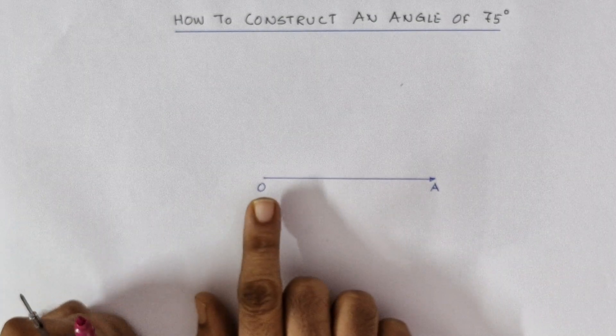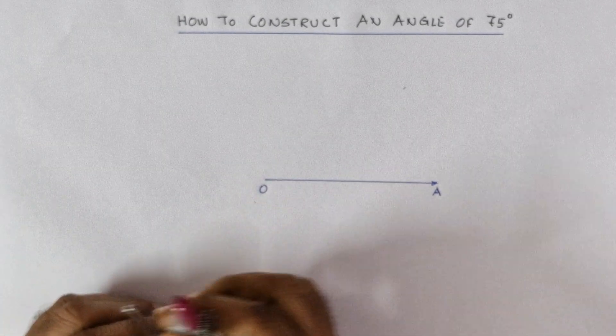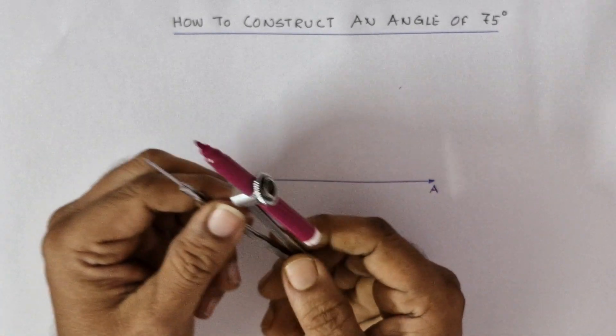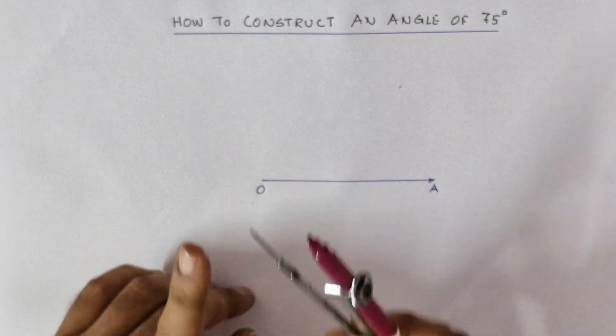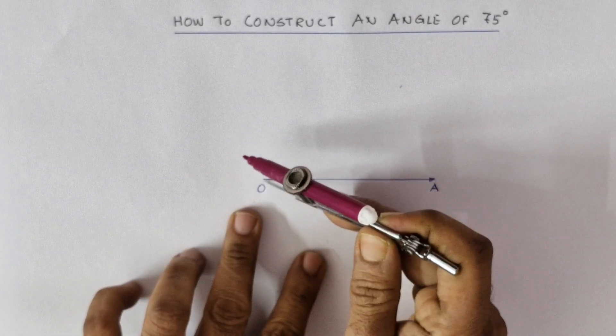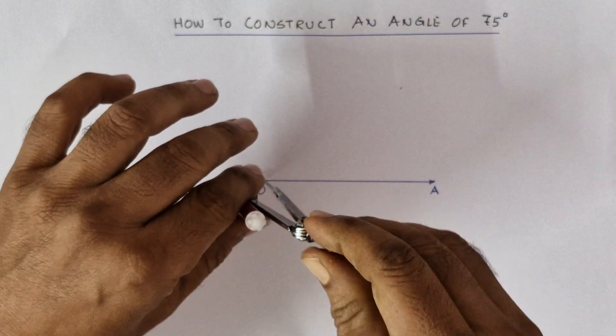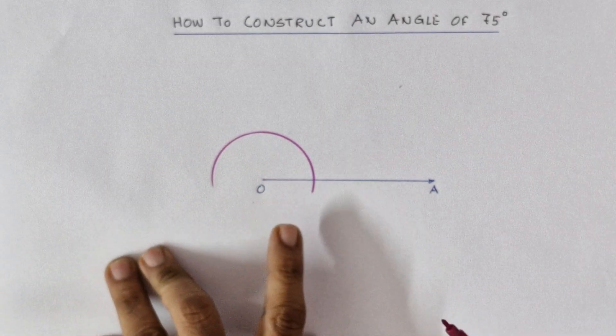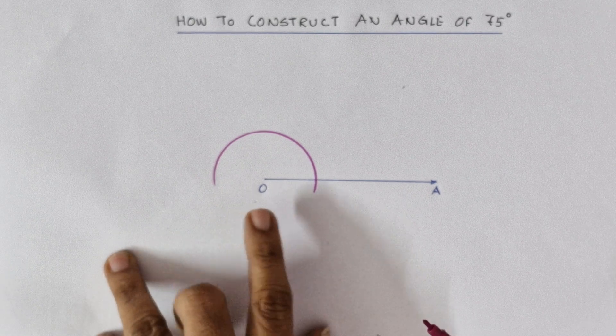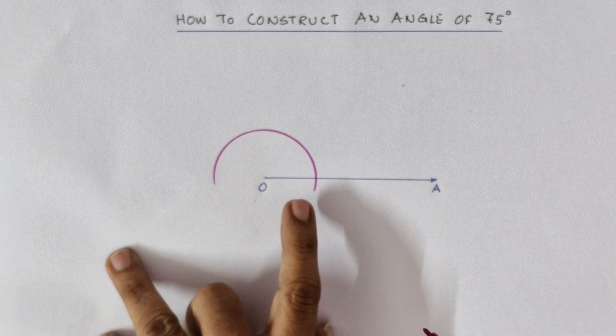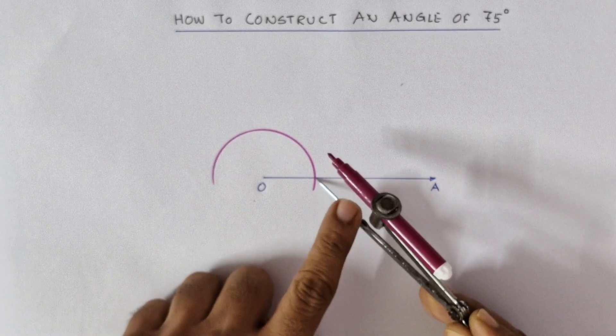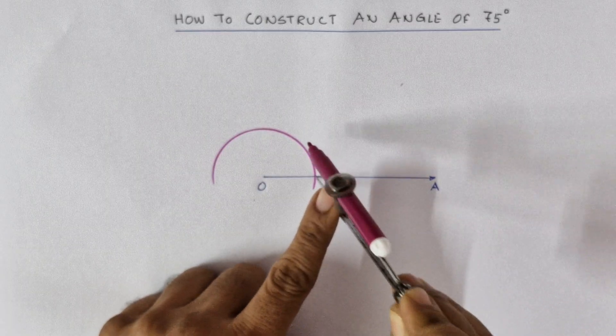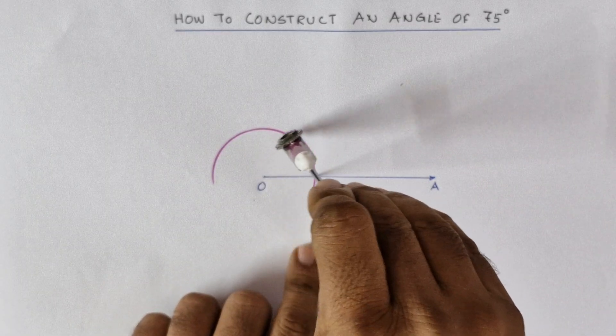Take the compass, take any radius of your choice, point the needle in the vertex O and draw an arc so that the arc will be intersecting OA at a certain point. Point the needle there again and draw an arc intersecting the main arc.